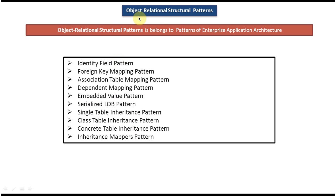So all these patterns come under object relational structural patterns, which belong to patterns of enterprise application architecture. I have created videos for all object relational structural patterns — like identity field pattern, foreign key mapping pattern, and all of these patterns — where I have explained what each pattern is, provided examples and explanation, and explained how to use each design pattern. Please log into my channel and watch those videos to understand more about object relational structural patterns.